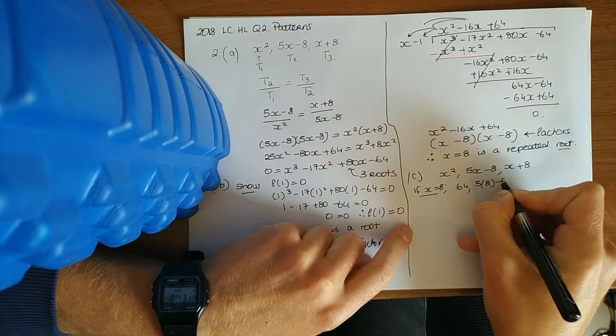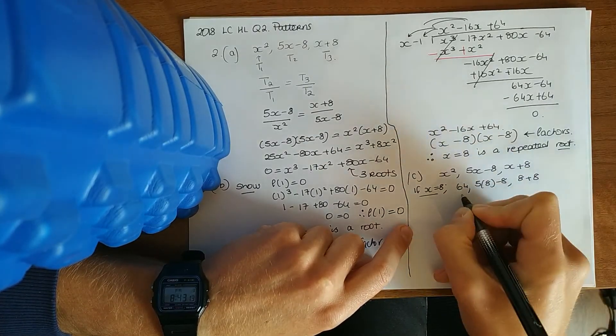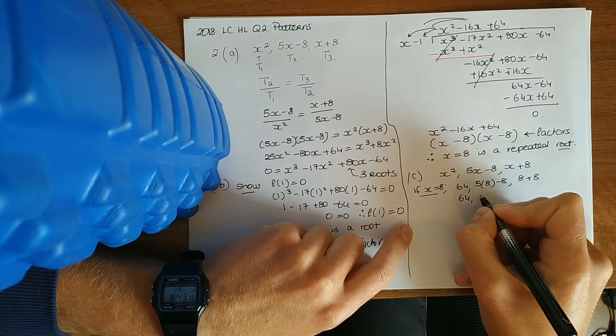This one: 5 times 8 minus 8. And 8 plus 8, so 64. 40 minus 8 is 32. 16.